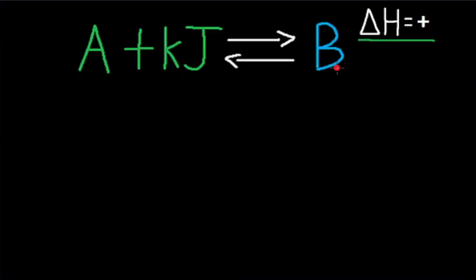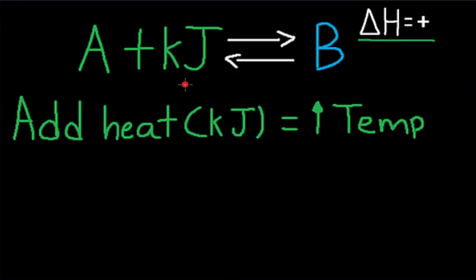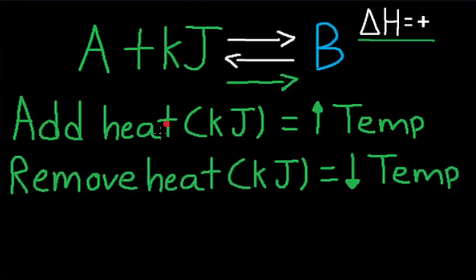The next stress is increasing or decreasing temperature. For endothermic reactions, heat can be treated as a reactant. So if we add heat or increase temperature, the reaction will shift right — don't point at what is being added. If we remove heat or decrease temperature, the reaction will shift left — point at what is being removed.